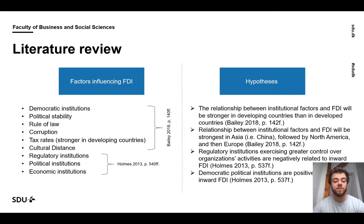Looking at the literature review, there are several factors influencing FDI. For example, democratic institutions like civil liberties, political stability, the honesty of the government, rule of law, corruption, tax rates, cultural distance. Also regulatory institutions in terms of the trade policy, political institutions, economic institutions in terms of inflation or GDP per capita.